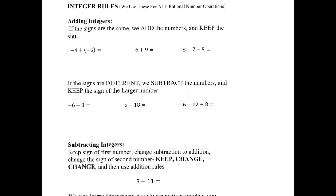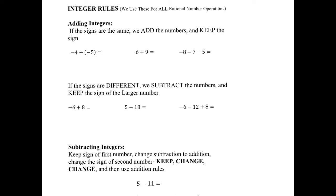Today's lesson is basically a review. We did this at the very beginning of the year. We are going to talk about the rules for integer operations. The reason these rules are important is because we use all of the rules for integer operations for rational numbers. An integer is a signed number, but rational numbers are decimals and fractions. Once you learn the rules for integers, you can apply those to rational numbers.